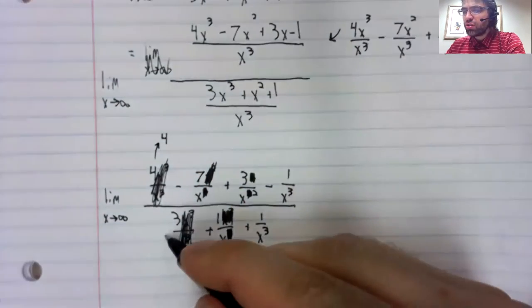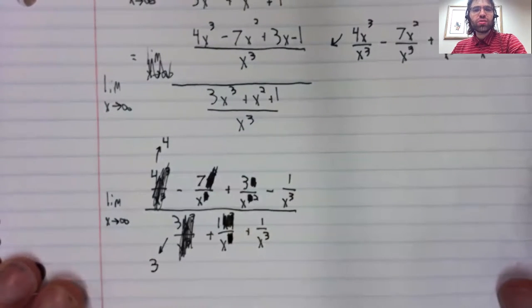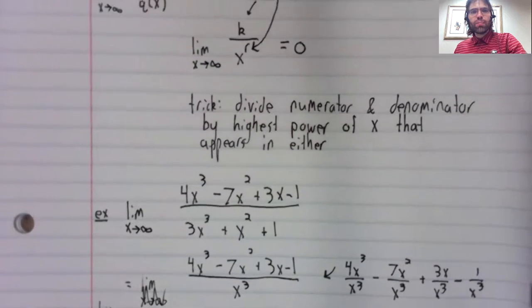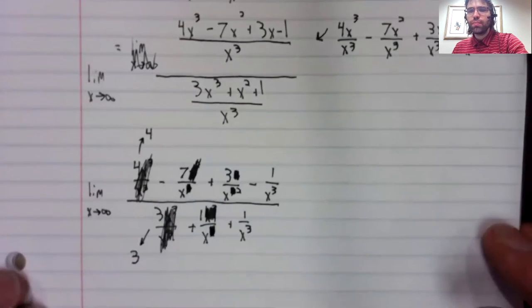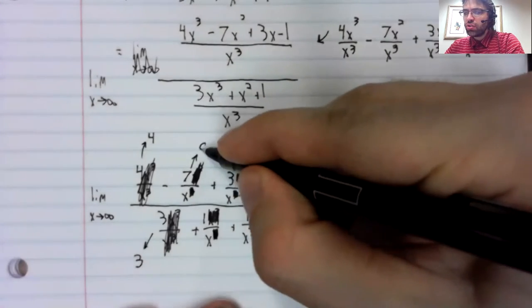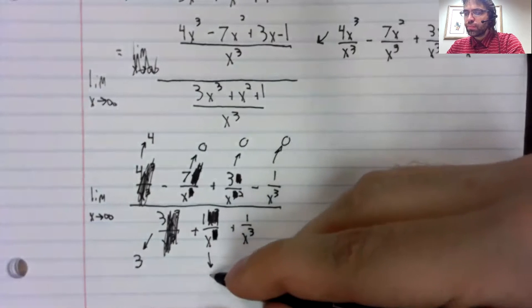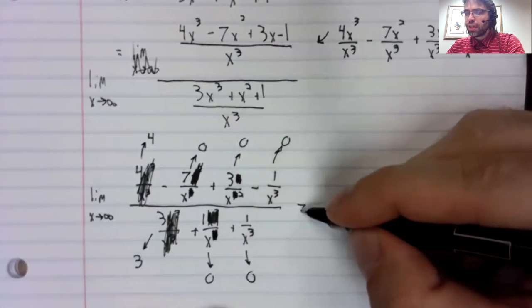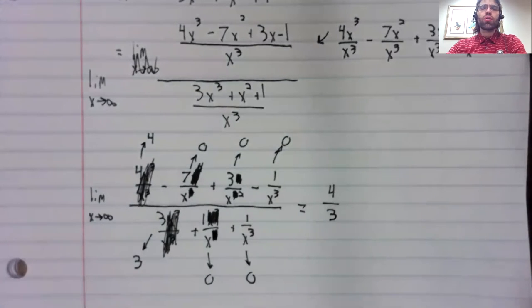But what happens now as x goes to infinity? Well, constants go to constants. And scrolling back up here, every single other term is going to zero. That goes to zero, that goes to zero. And we're simply left with four thirds. So you see this trick has allowed us to take this limit.